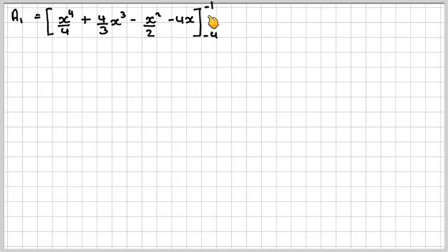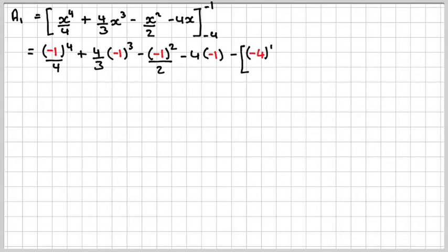What you need to do is substitute minus 1. You can see I've substituted here in red instead of the x value. Minus should be put in a bracket. And then substitute in minus 4. So it's always this one minus this one.